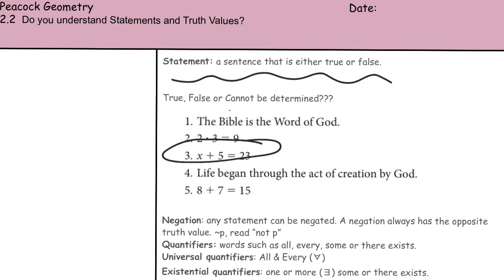So four, life began through the act of creation by God - true. And number five, eight plus seven equals 15. Once again, true. So we've got true, true, false is not a statement, true, true.